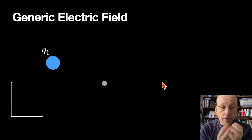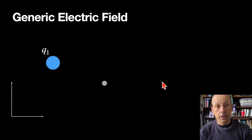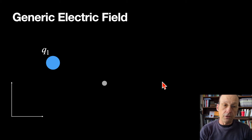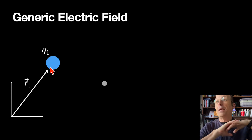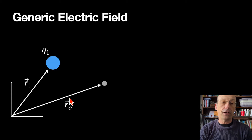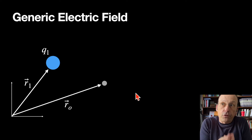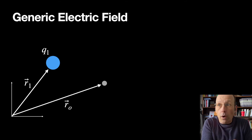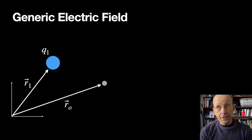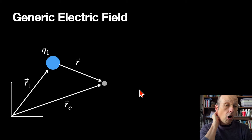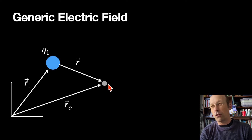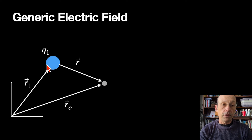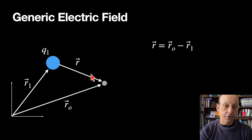Here's the generic model for calculating the electric field. I have some charge Q1, and I have an observation location where I want to find the electric field. I need to know the vector location of charge Q1 — it could be anywhere — and I need to find the vector location of the observation point RO. The first thing I need to do is find the vector R, which is the vector from Q1 to RO. It's just the observation position vector minus the source position vector, and that gives us R.